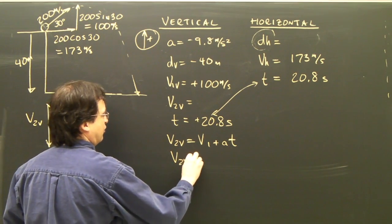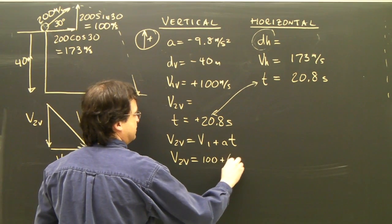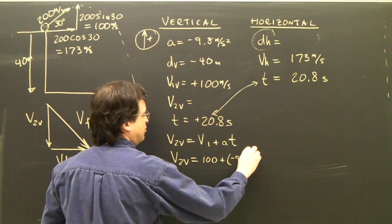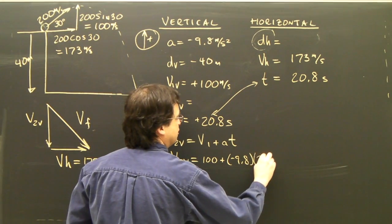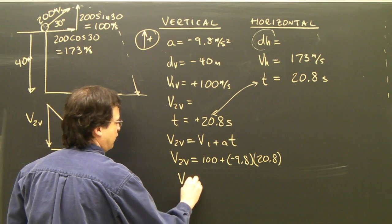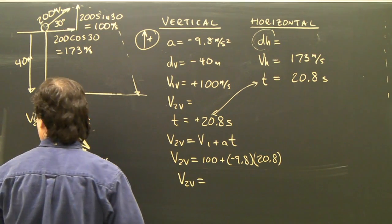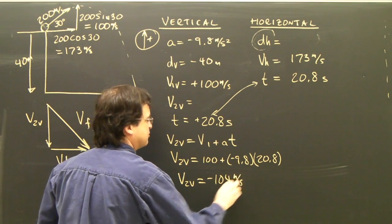So V2 vertical equals V1, 100, plus gravity is negative 9.8, and T we solved for in part 2, that was 20.8 seconds. So V2 vertical ends up being negative 104 meters per second.